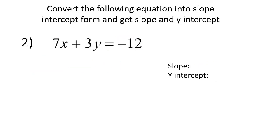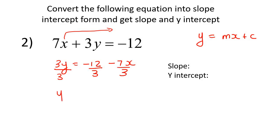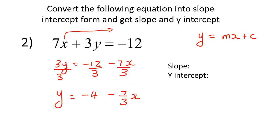Here's our next example. To get the equation in slope-intercept form, you've got to get the y completely by itself. I'm going to take this 7x over to the other side, so we're going to end up with 3y equals negative 12. When 7x goes to the other side it becomes negative, so it becomes negative 7x. Then I need to divide everything by 3, because you want to get this y by itself — so those cancel out, and what you do to one side you have to do to the other. You end up with y equals negative 4 minus 7 over 3x. You can also write this as 7x over 3 — it doesn't really matter.